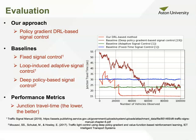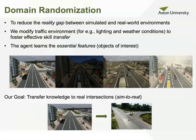We attribute this performance to the use of photorealistic visual data to optimize signals, which has several benefits including detection of vehicle type, their precise position, and estimation of speed based on their positions in consecutive frames. We followed a principled framework to train our signal control agent through a curriculum of progressively harder tasks using domain randomization and transfer learning—for example, starting from controlling signals on a clear sky day and then altering various aspects of the traffic environment like different weather and lighting conditions.